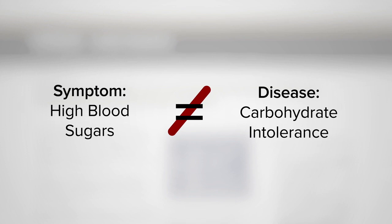The disease is carbohydrate intolerance. People with diabetes can't properly handle carbohydrates, and this manifests as high blood sugars.